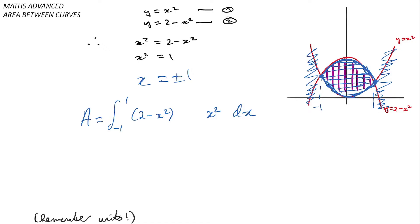So that's 2 minus x squared minus x squared, which will essentially then be this, and I'll leave it as an exercise for you to prove that in fact this integral is equal to 8 over 3.